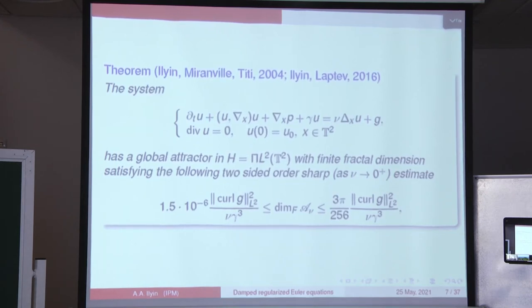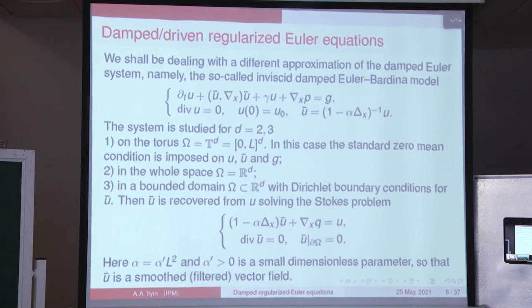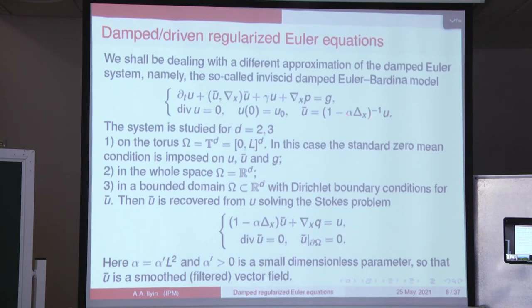Now we turn to the subject of recent work, where we proposed a different way of regularization of the Euler equations with damping, namely by means of the so-called alpha models. U-bar is a smoothed vector field recovered from U by solving a Helmholtz operator, where alpha is a small parameter with dimension of length squared. This is called a simplified Euler-Bardina model in turbulence theory, but we look at this model purely mathematically.